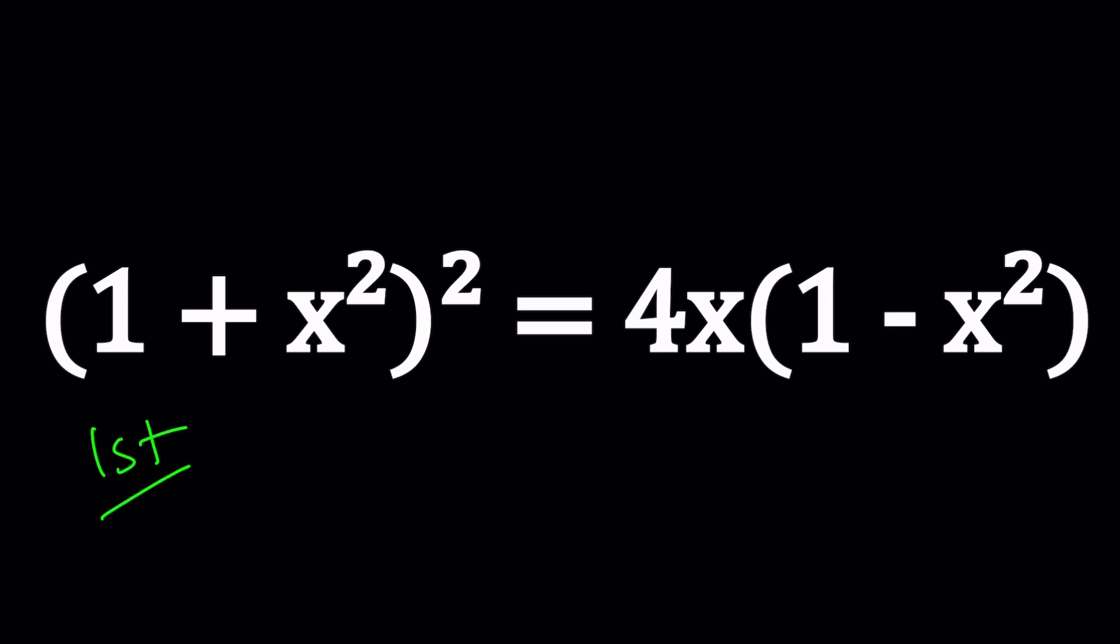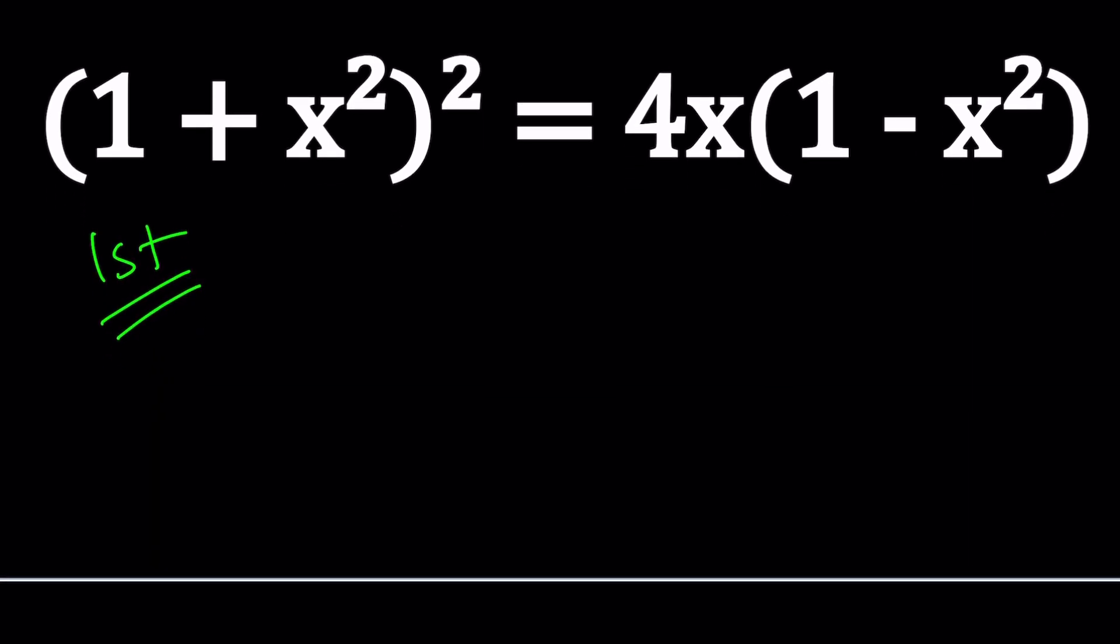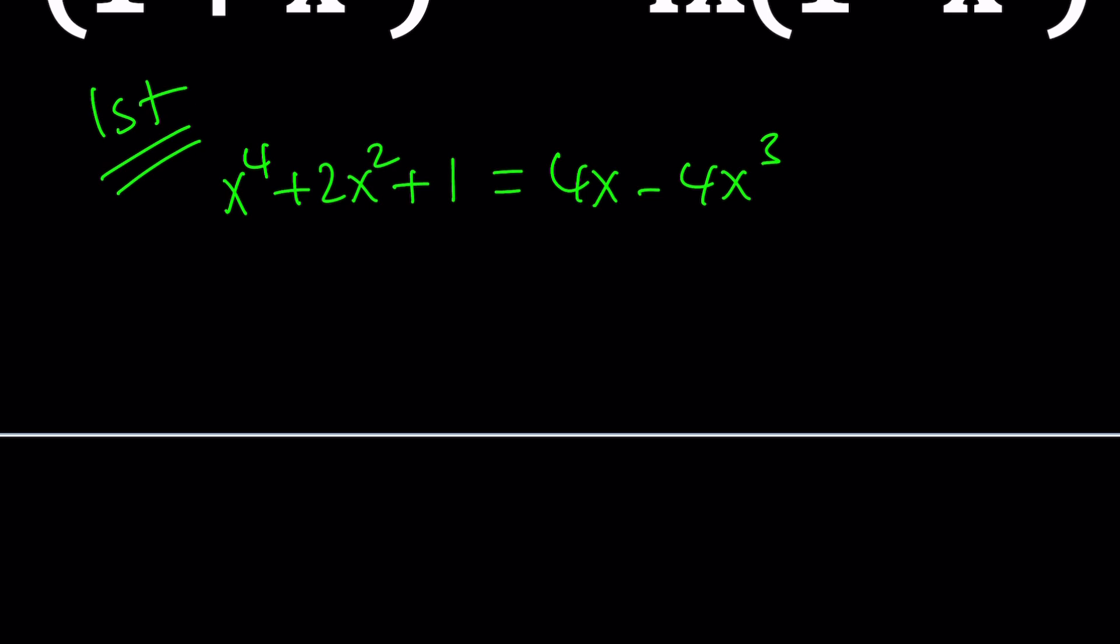So first method, I'm going to go ahead and expand this. This is going to give me x⁴ + 2x² + 1 equals 4x - 4x³. Now let's go ahead and bring the x³ over here so we can write it as x⁴ + 4x³ + 2x² - 4x + 1 = 0. Nice.